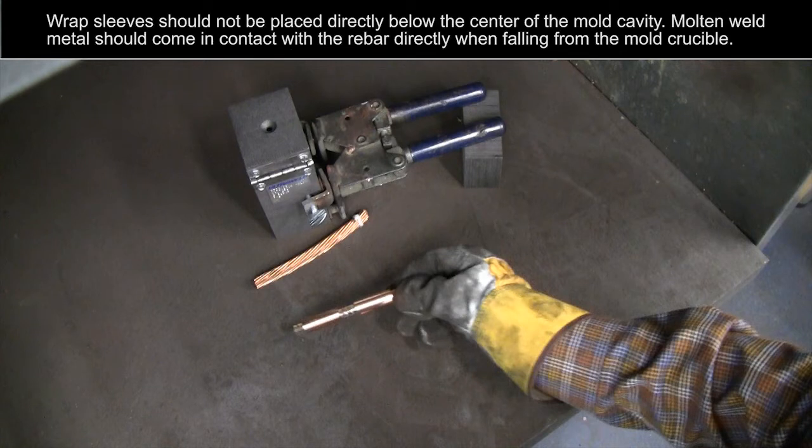Wrap sleeves should not be placed directly below the center of the mold cavity. Molten weld metal should come in contact with the rebar directly when falling from the mold crucible.